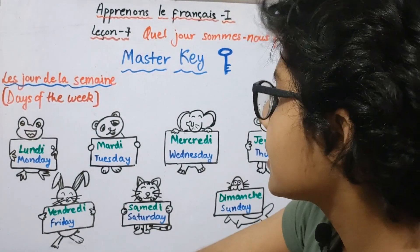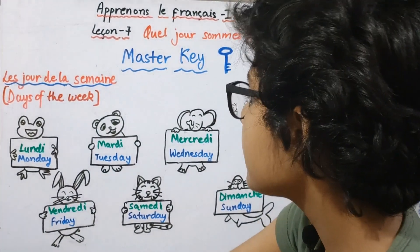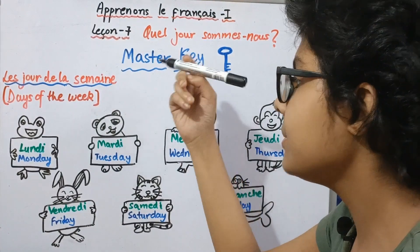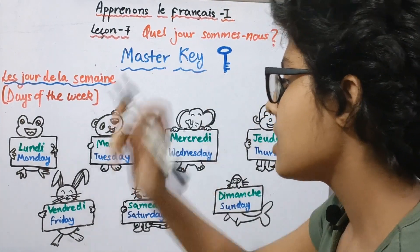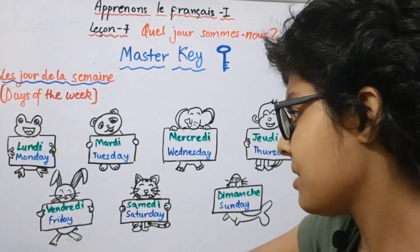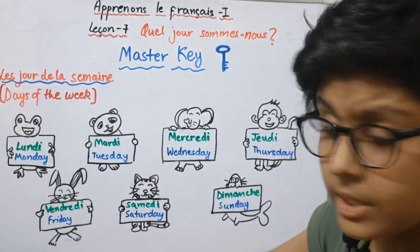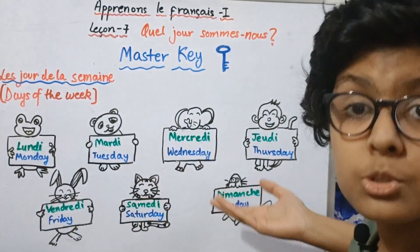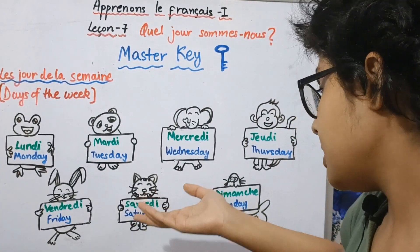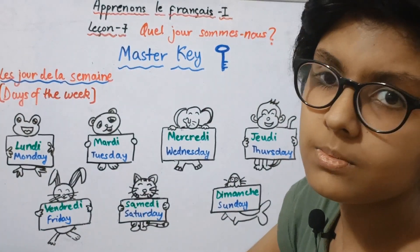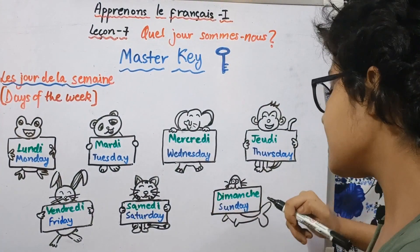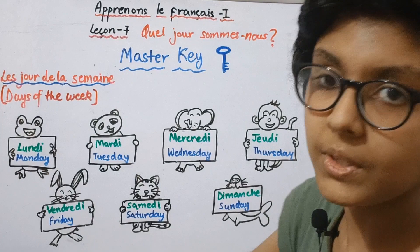Let us read the topic: les jours de la semaine — it means 'the days of the week.' What is the day today? On dit: c'est lundi, c'est mardi, c'est mercredi, c'est jeudi, c'est vendredi, c'est samedi, or c'est dimanche. Today is dimanche — it means Sunday — so today is Sunday, the day you are watching my video.